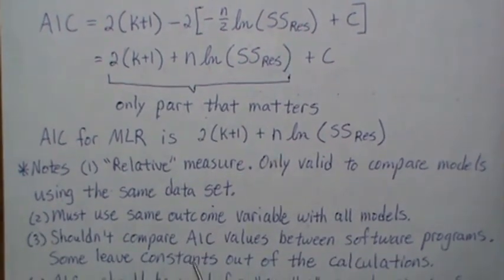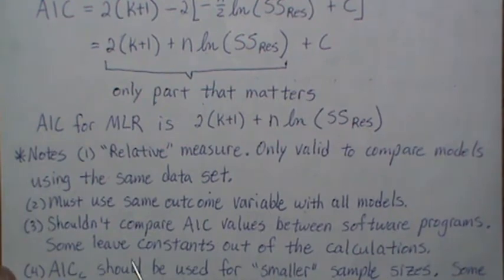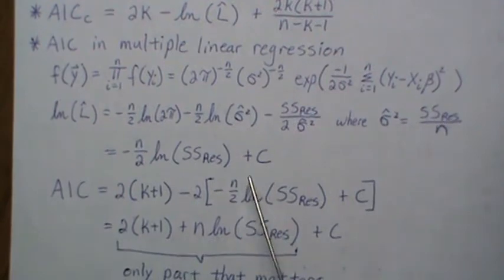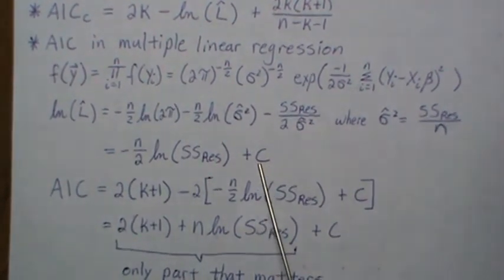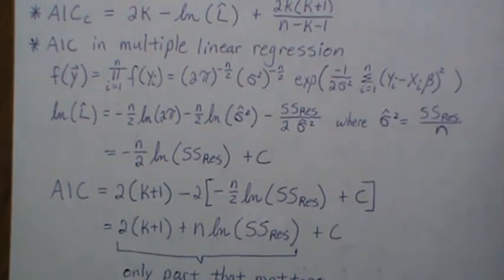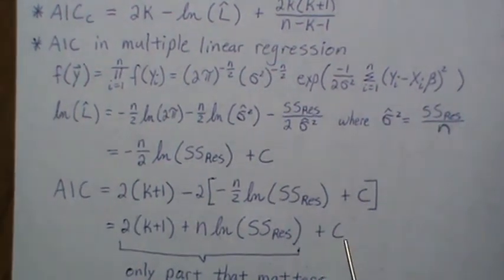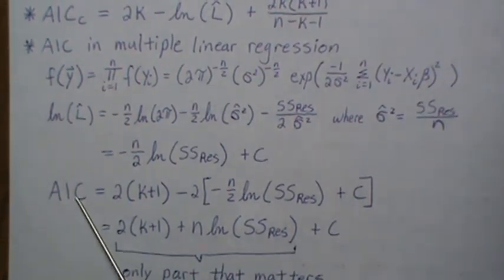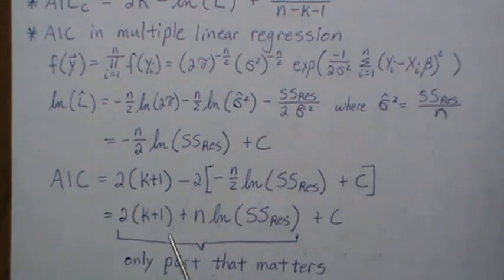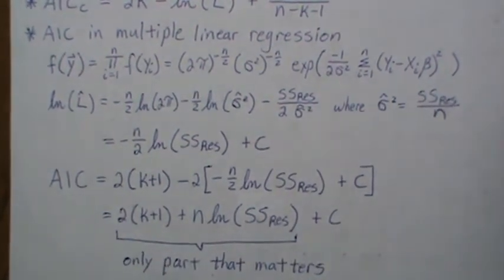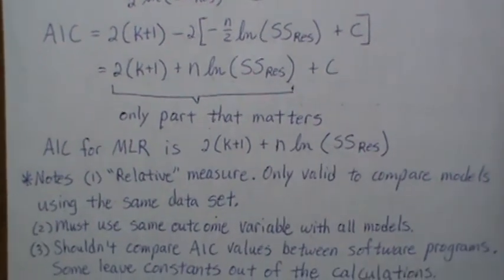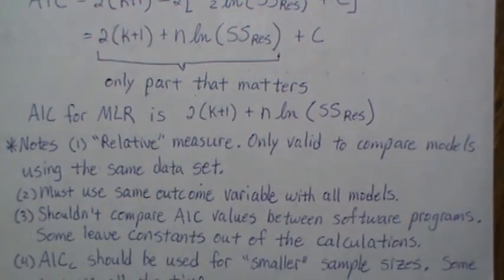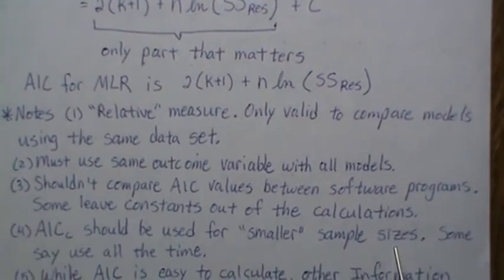We shouldn't compare values between software programs, because some have constants and some leave out the constants. While this constant doesn't matter ultimately when you're comparing AIC values within the same computer system, some computer software will include this constant in the AIC and some will only include the pieces that matter. You have to be careful about comparing AIC values between software packages.